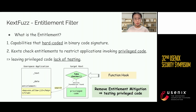Therefore, we hook the entitlement check functions in kernel extensions. No matter which entitlement is required, the hooker function will always return true for the checks. Thus, the fuzzer can test the privileged code as normal code.